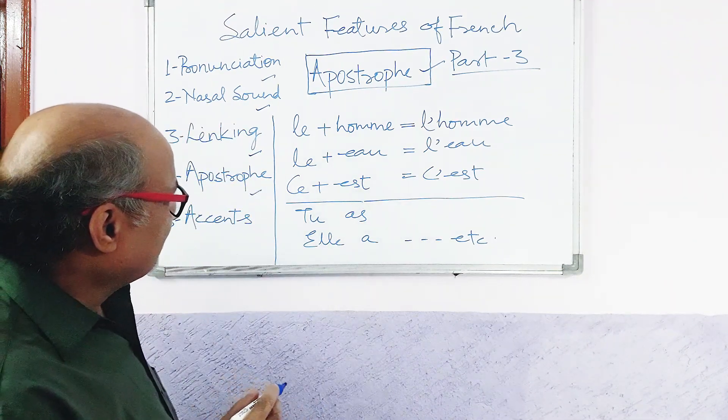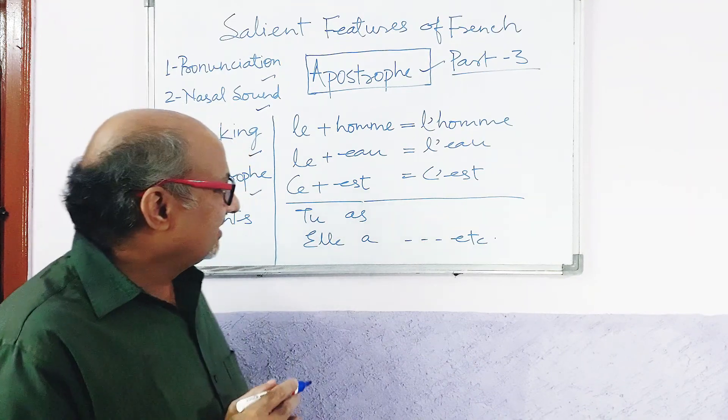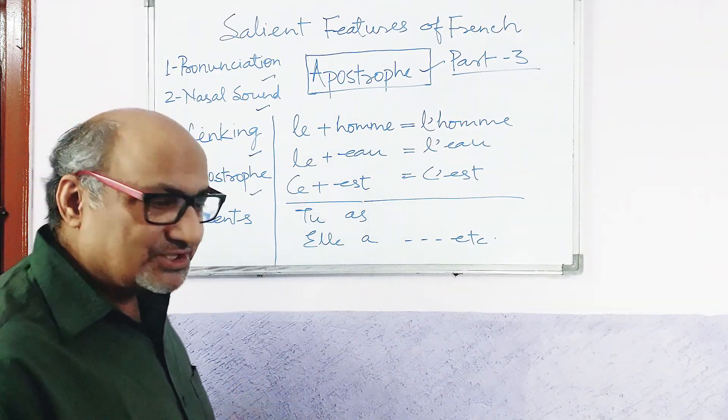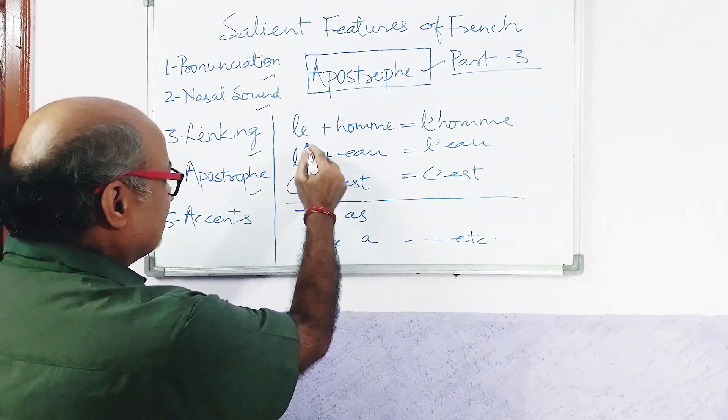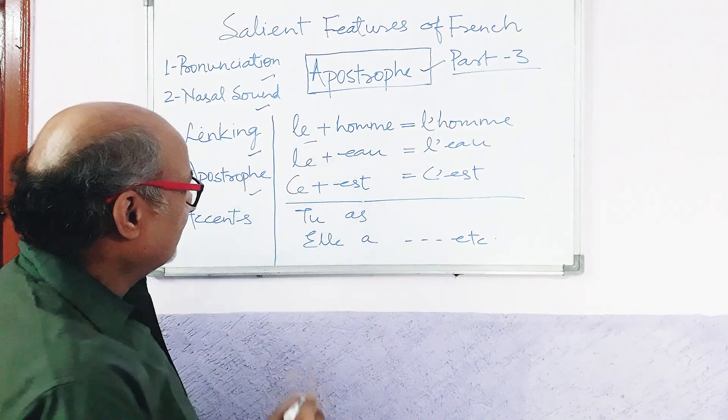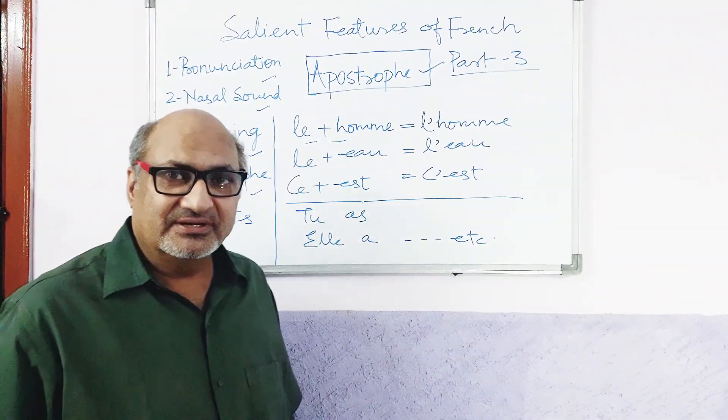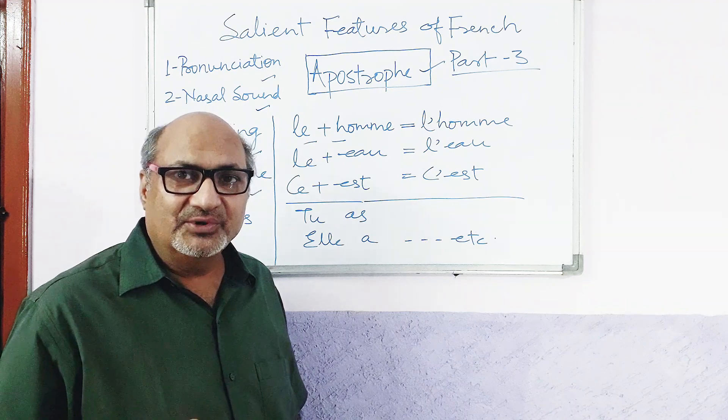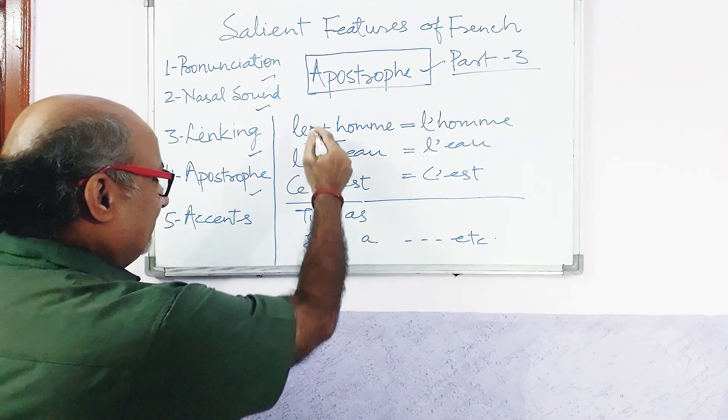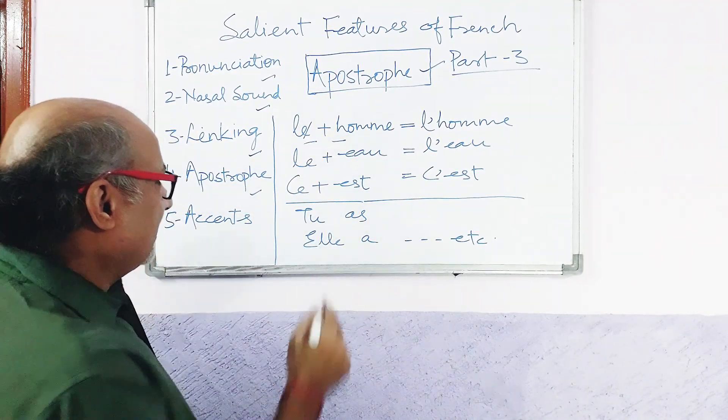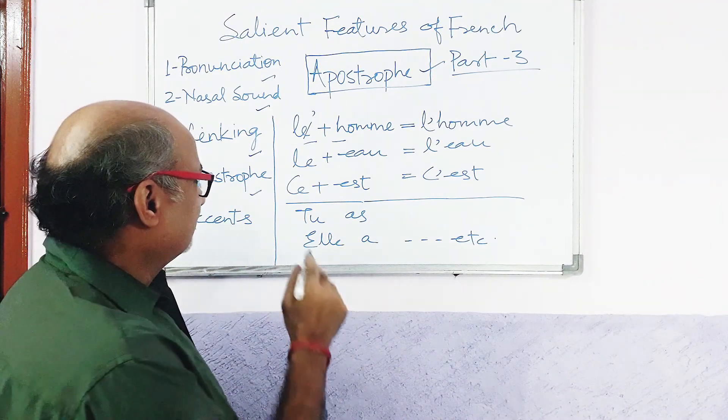But, the case is different in French area. It's used in the situation when a word ends with a vowel and the very next word also begins with a vowel or mute h. In that situation, we drop first word vowel and put apostrophe in its place.